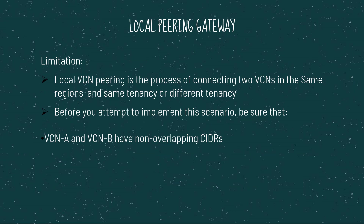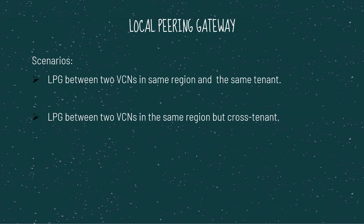There are a few limitations: the VCNs cannot be in different regions. For that, we need to use Remote Peering. And before we do this peering, there should not be any overlapping CIDRs between the VCNs. I am going to show two different scenarios, but in this session, the scenario we are going to see is connectivity between the same region and the same tenancy — VCNs which are in the same region and the same tenancy.